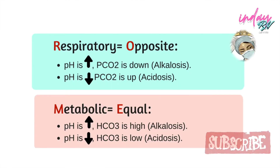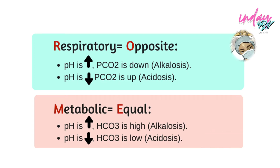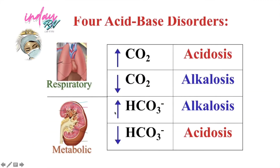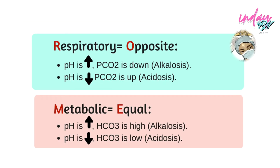To get back to the ROM: M stands for metabolic and E stands for equal. So if the pH and HCO3 are high, that is alkalosis. While if the pH is low and HCO3 is also low, that is acidosis. Always remember your ROM — respiratory, the direction of the arrows will always be opposite, and for the metabolic, the direction of the arrows will be equal.